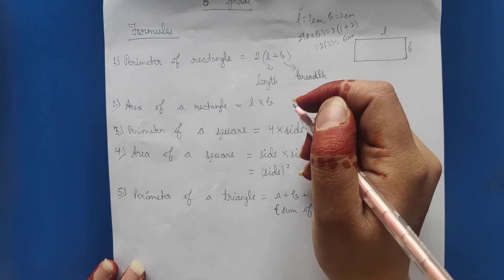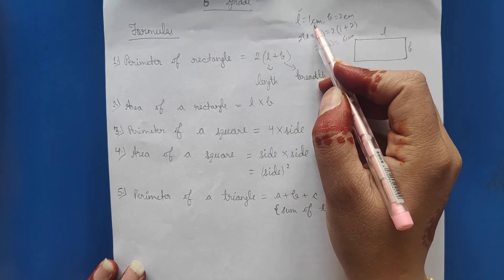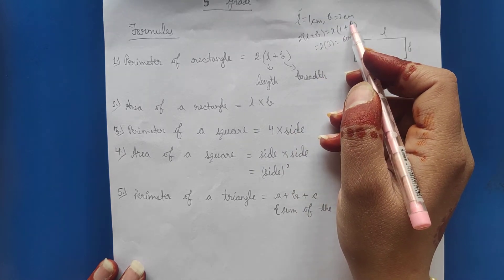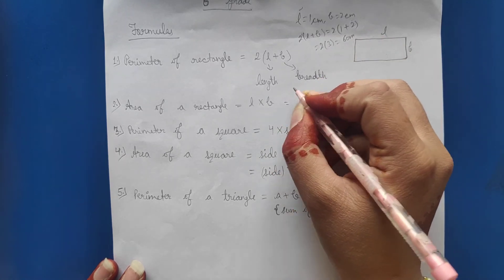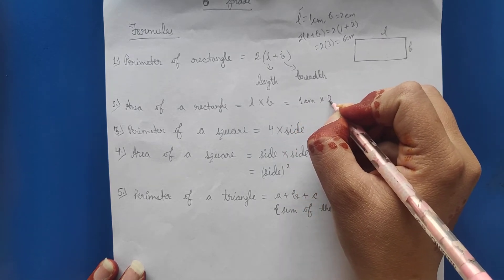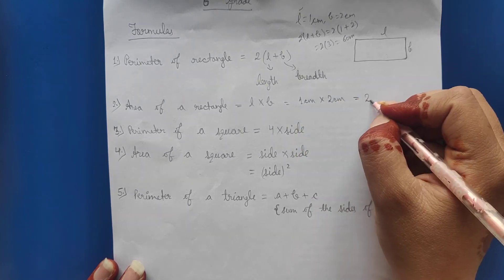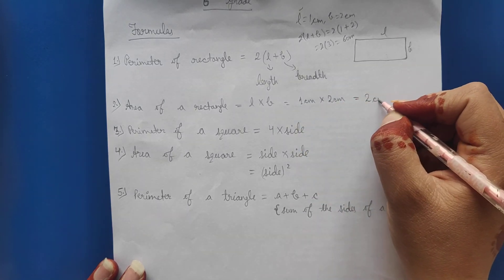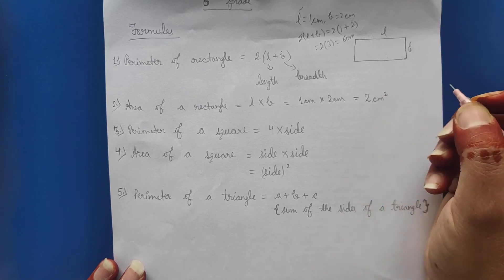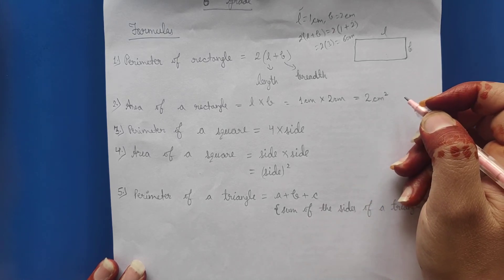So area of a rectangle is equal to length multiplied by breadth. Same example, 1 centimeter length and 2 centimeter breadth, so the area will be 1 centimeter multiply by 2 centimeter, which becomes 2 centimeter square or 2 square centimeter.